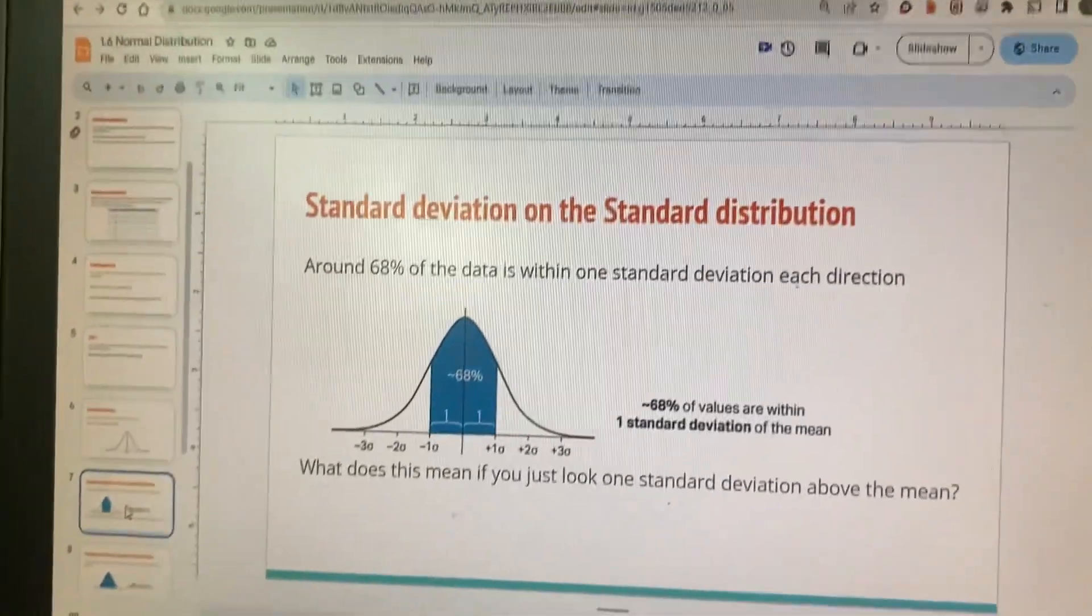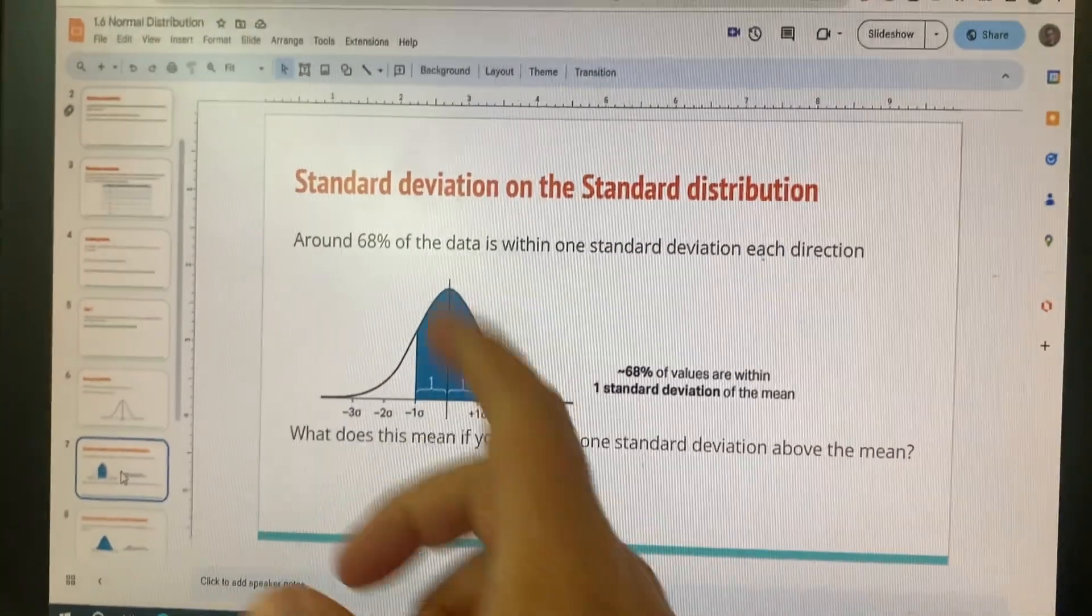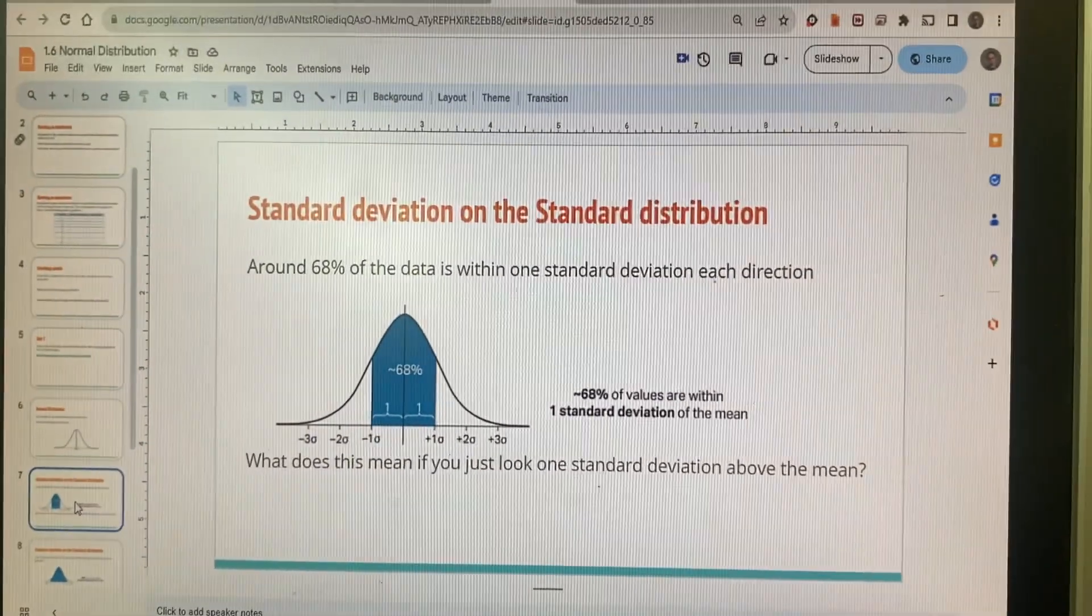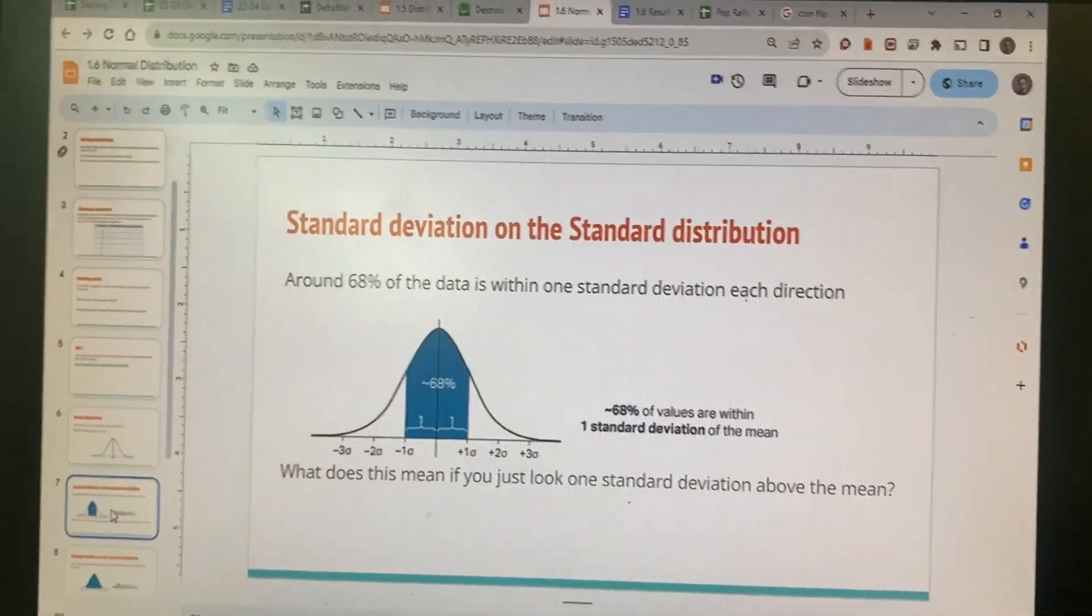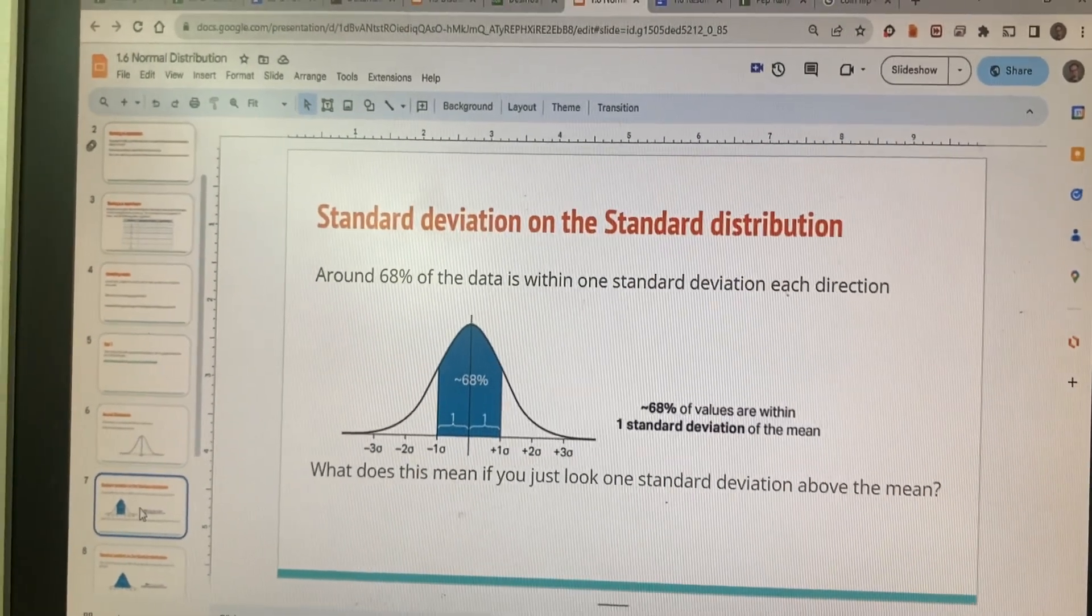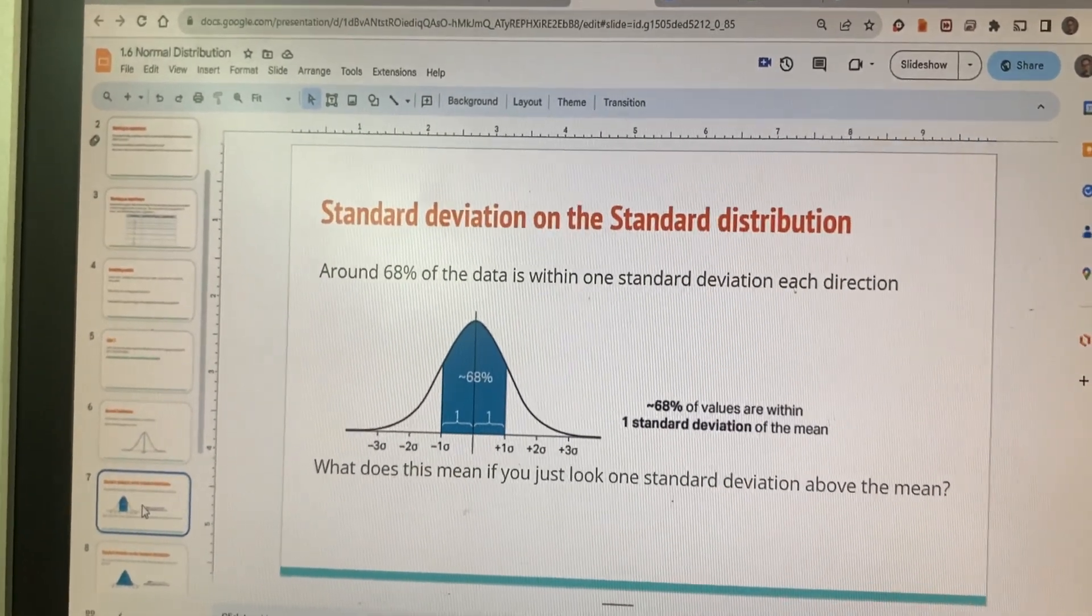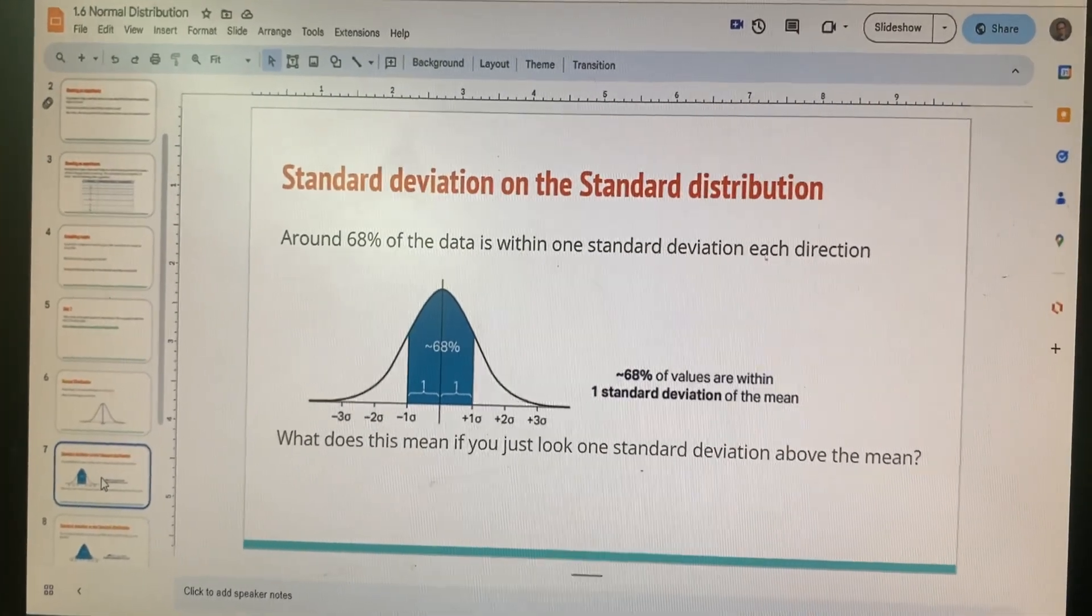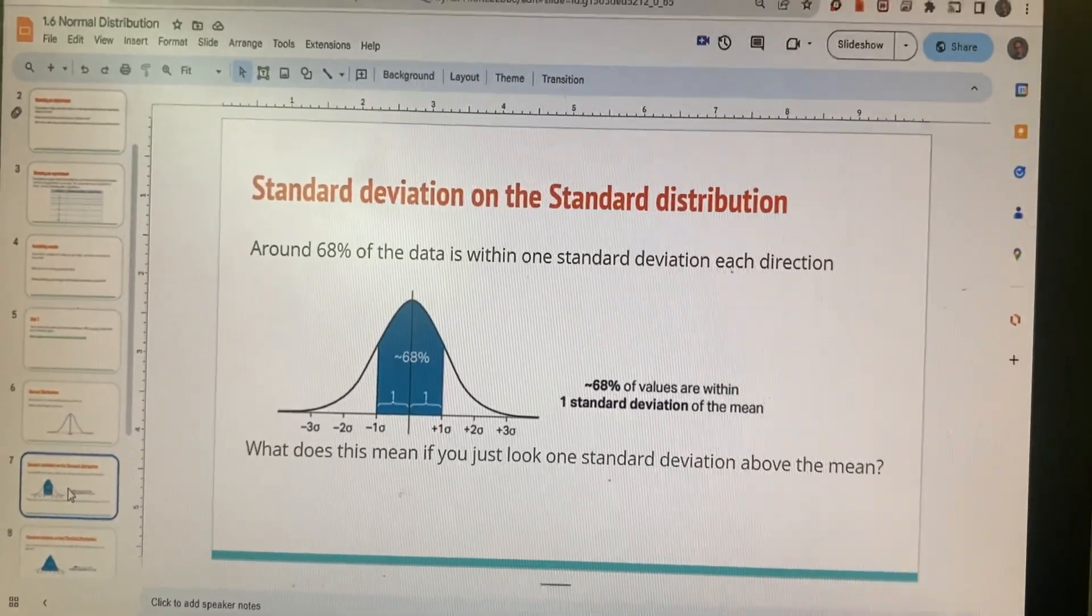The other things you need to start adding into your notes: this is standard deviation on the standard distribution. This is not the same as our box plot where we're just cutting up the data into parts. We have gone through and calculated the standard deviation, and we're looking to see where that happens.